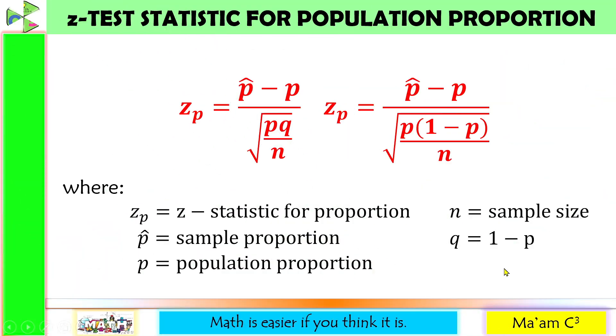In one of my previous lessons, I have already introduced the formula we are going to use in solving involving population proportion. Again, Z sub P here is the Z statistic for proportion. P hat is the sample proportion. P is the population proportion. N is the sample size. Q is equal to 1 minus P.